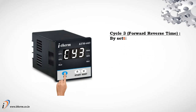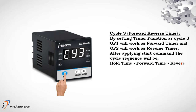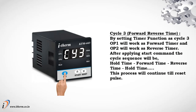Cycle 3, forward reverse time: by setting timer function as cycle 3, output 1 will work as forward timer and output 2 will work as reverse timer. After applying start command, the cycle sequence will be: hold time, forward time, reverse time, hold time. This process will continue till reset pulse.